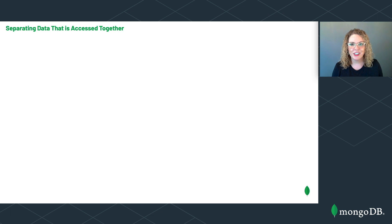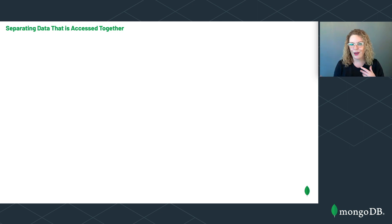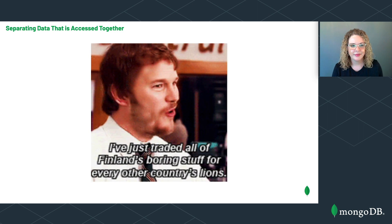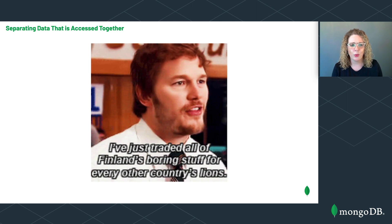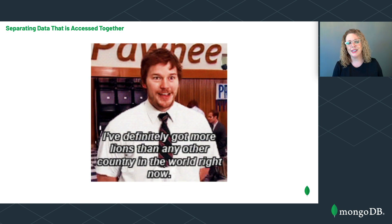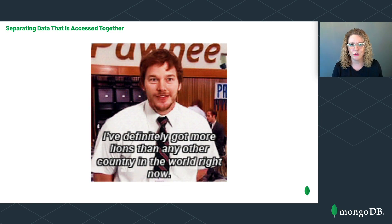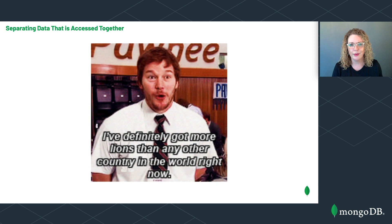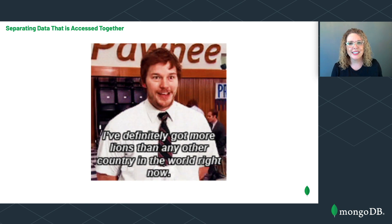The Model UN event begins and Andy is very excited to represent Finland. He begins trading with other countries, saying: 'I've just traded all of Finland's boring stuff for every other country's lions. I've definitely got more lions than any other country in the world right now.' So let's take a look at what Andy's data looks like in the database after he's done trading for lions.